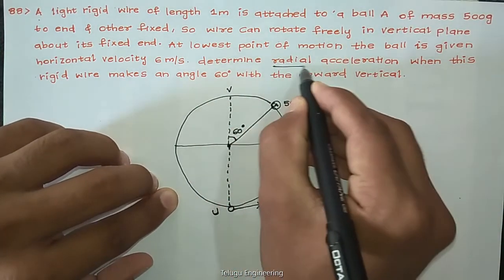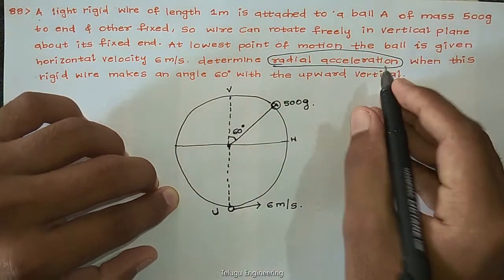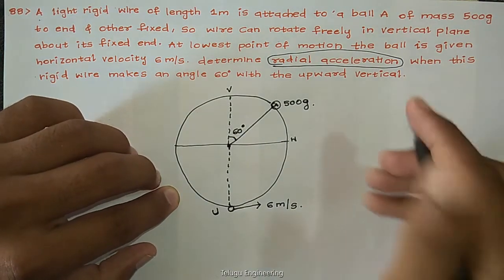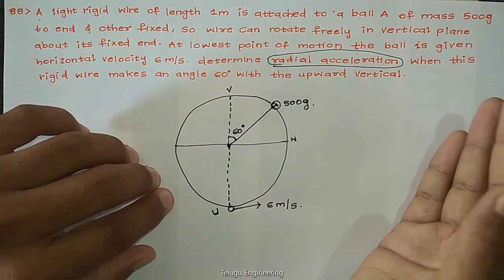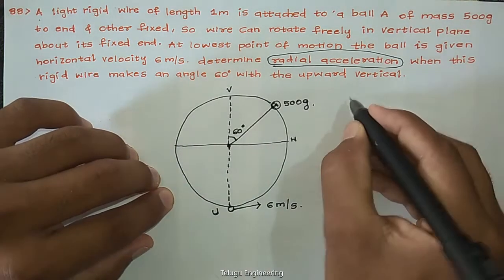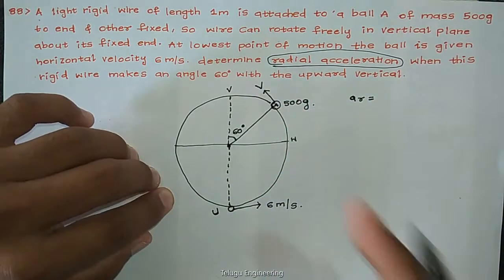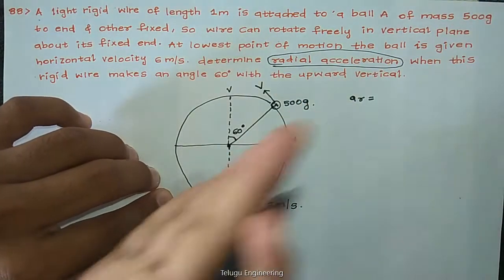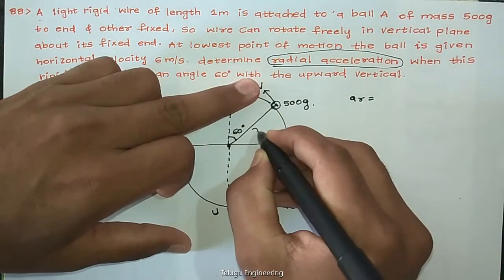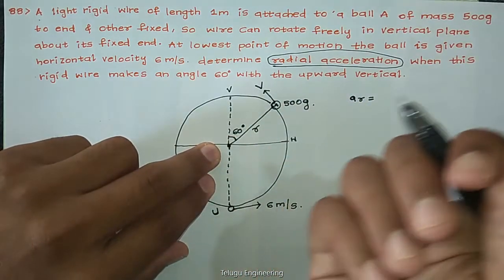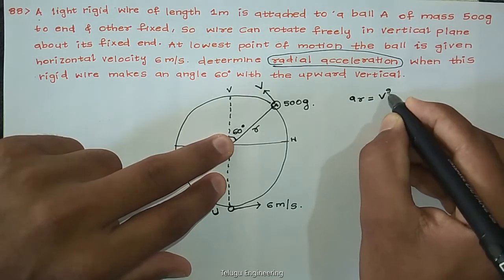Before continuing the solution, I will explain a small concept. Whenever a ball is moving in a circular path on a vertical plane, there are two types of accelerations. One is the radial acceleration directed inward, due to centripetal force. If the ball is moving with velocity v, and r is the radius, the radial acceleration ar equals v squared by r.